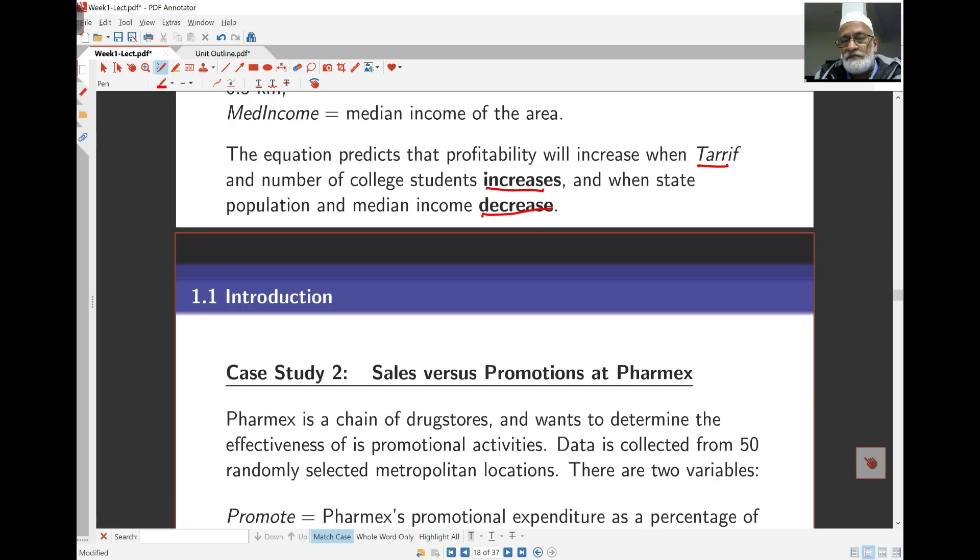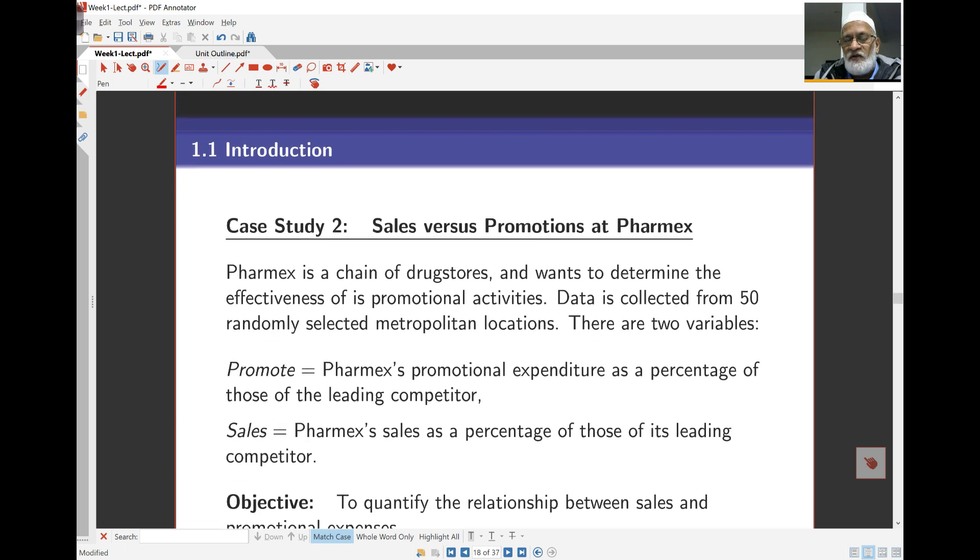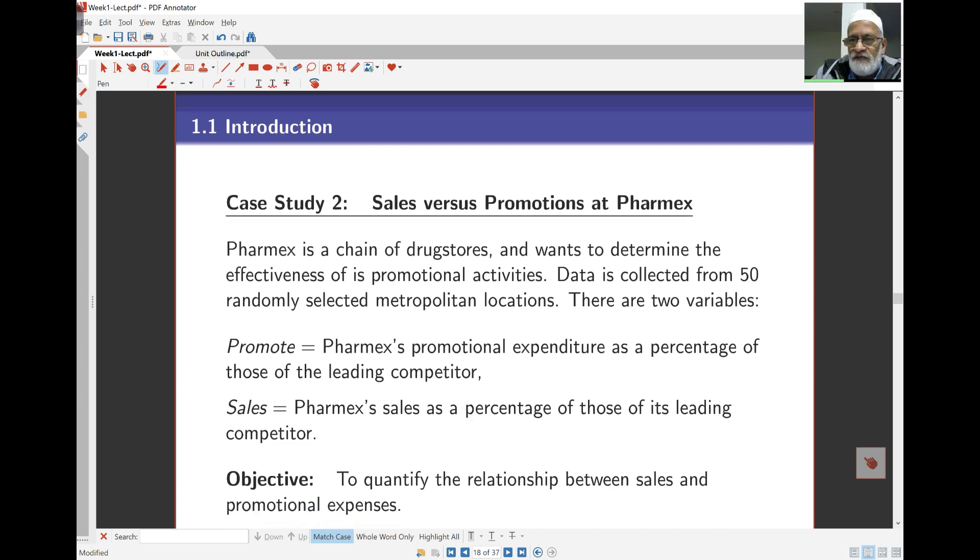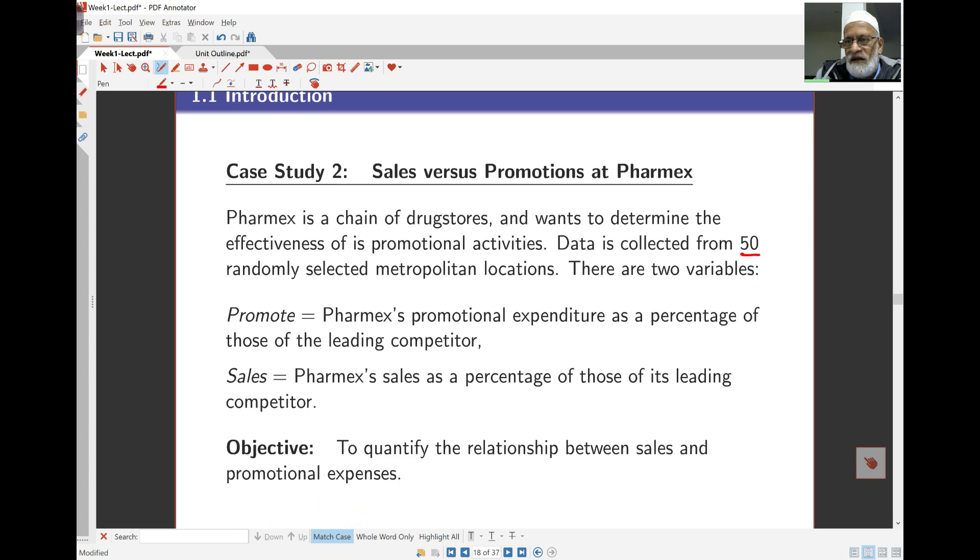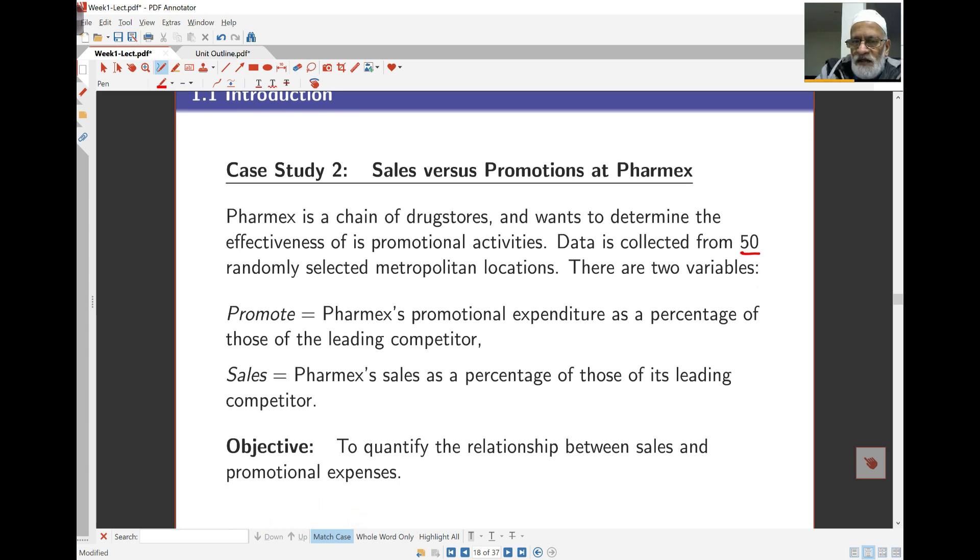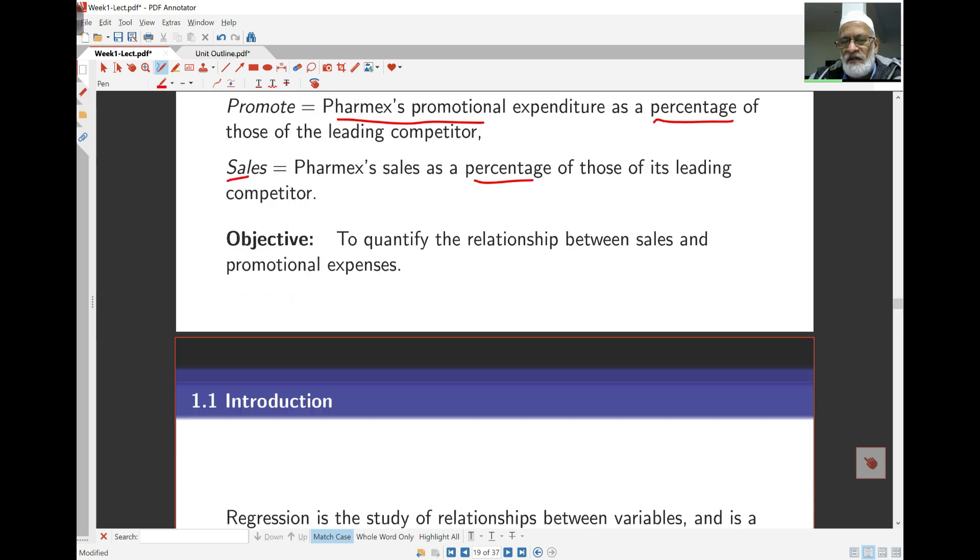There's a negative in front of state population and a negative in front of median income. So with lower state populations and lower median incomes, the profit actually increases. This is interesting. Another example is this pharmaceutical chain called Pharmax. They are looking to determine the effectiveness of the promotional activities. They collected data from 50 of the outlets randomly selected. The two variables are Promote, which is Pharmax's promotional expenditure as a percentage of that of its leading competitor, and Sales, again as a percentage of that of its leading competitor. The objective here is to quantify the relationship between the promotional expenses and their sales.